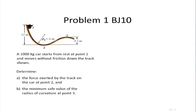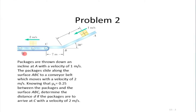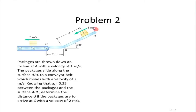I hope this is clear — this problem is reasonably straightforward. The next problem: packages are thrown along an incline at a velocity of 1 meter per second. They slide from point a to point b on a conveyor bed, and from b to c, where the coefficient of friction is 0.25 between the two surfaces. We want to determine the distance d such that packages arrive with a velocity of 2 meters per second. We simply use the work-energy theorem.